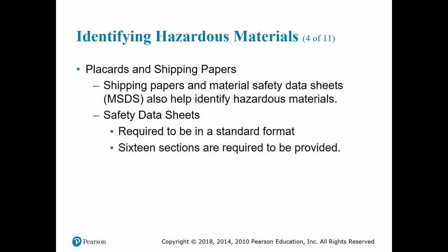Shipping papers are required to be in the cab of a motor vehicle, in the possession of a train crew member in the engine or caboose, in a holder on the bridge of a water vessel, or in the aircraft pilot's possession. As of June 2015, OSHA's hazard communication standard required chemical manufacturers, shippers, or distributors to provide information regarding the hazards of chemicals. This information is also provided in the form of safety data sheets.